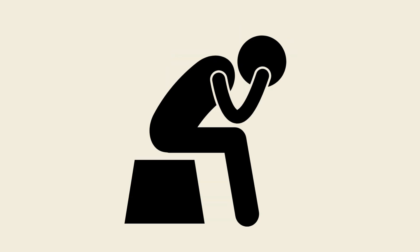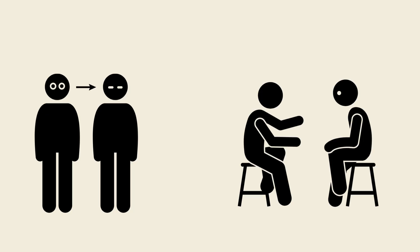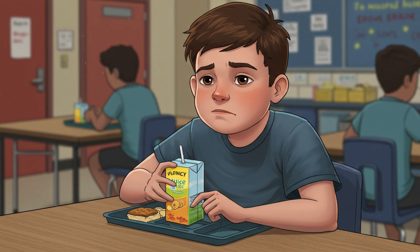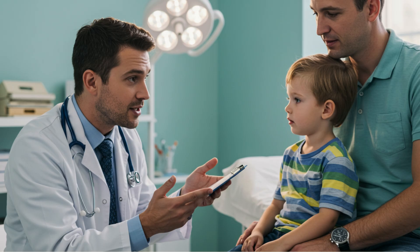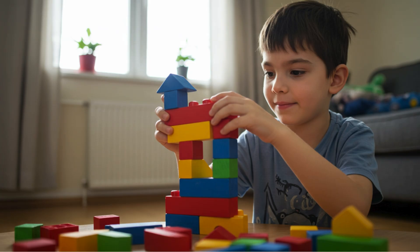Social interaction is often challenging, not because of a lack of interest, but because things like eye contact or casual small talk can feel as uncomfortable as staring at the sun. Routines and predictability are vital — a small change, like the wrong juice at lunch, can feel huge. Classic autism is usually diagnosed in early childhood and is lifelong. With support, people can thrive, but their way of engaging with the world will always be uniquely their own.